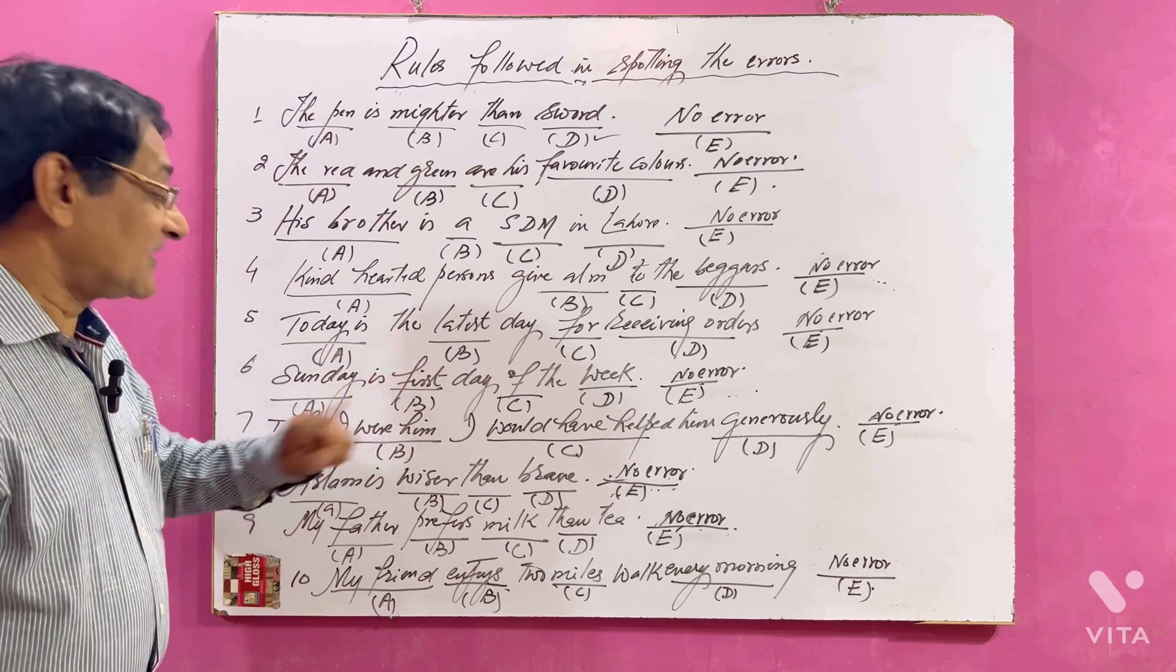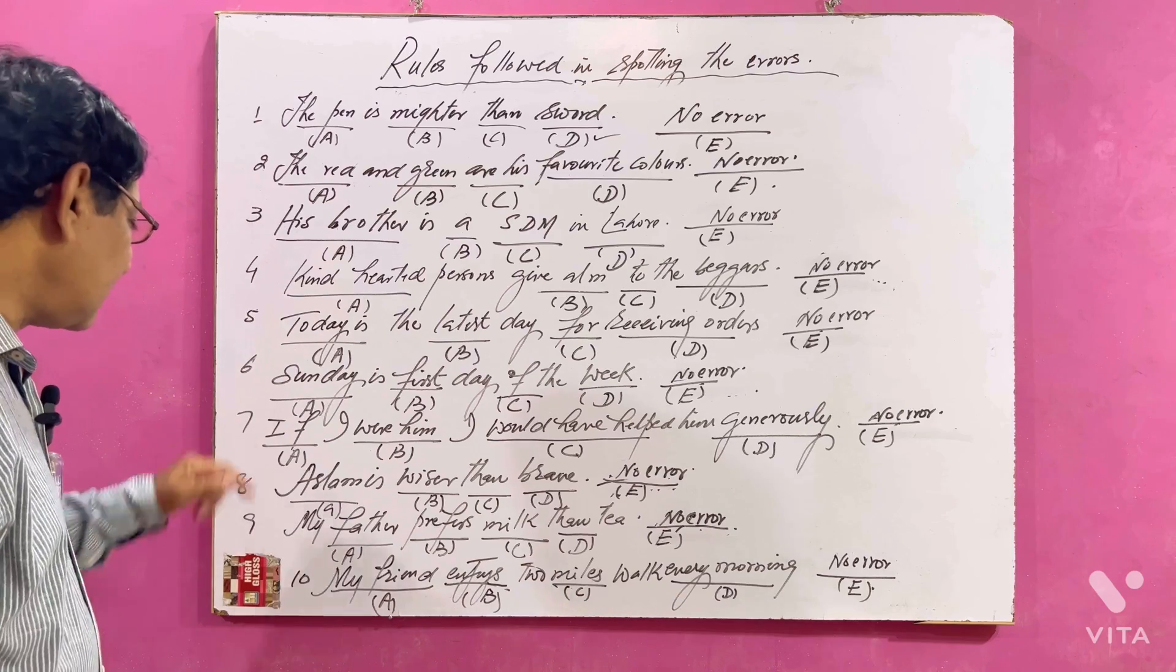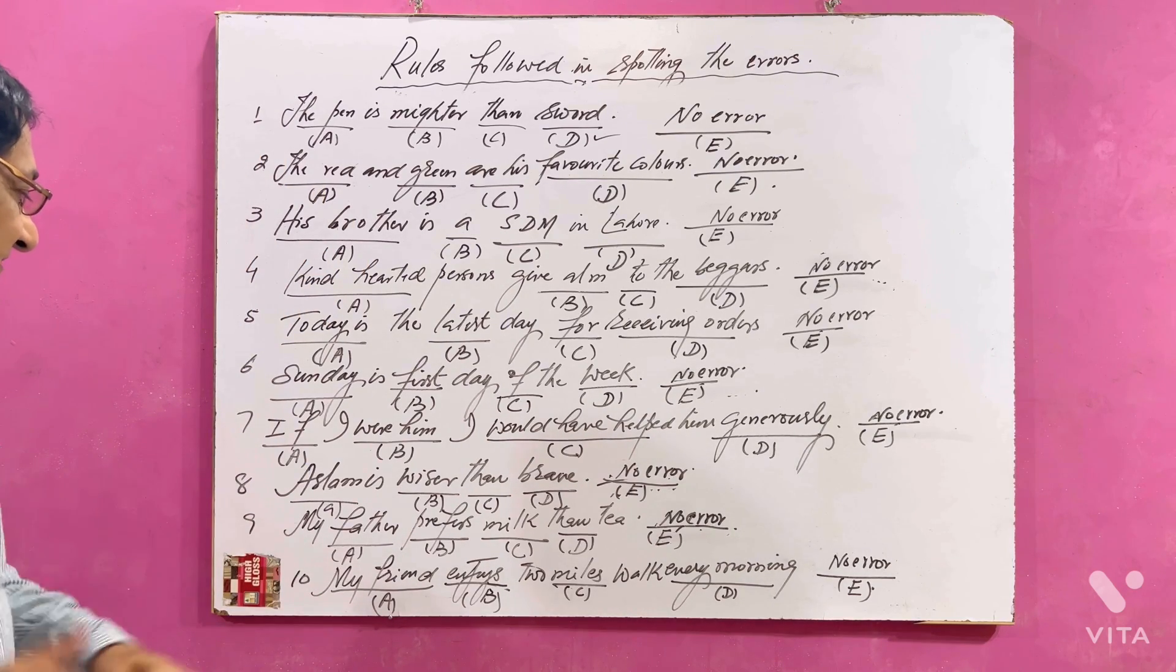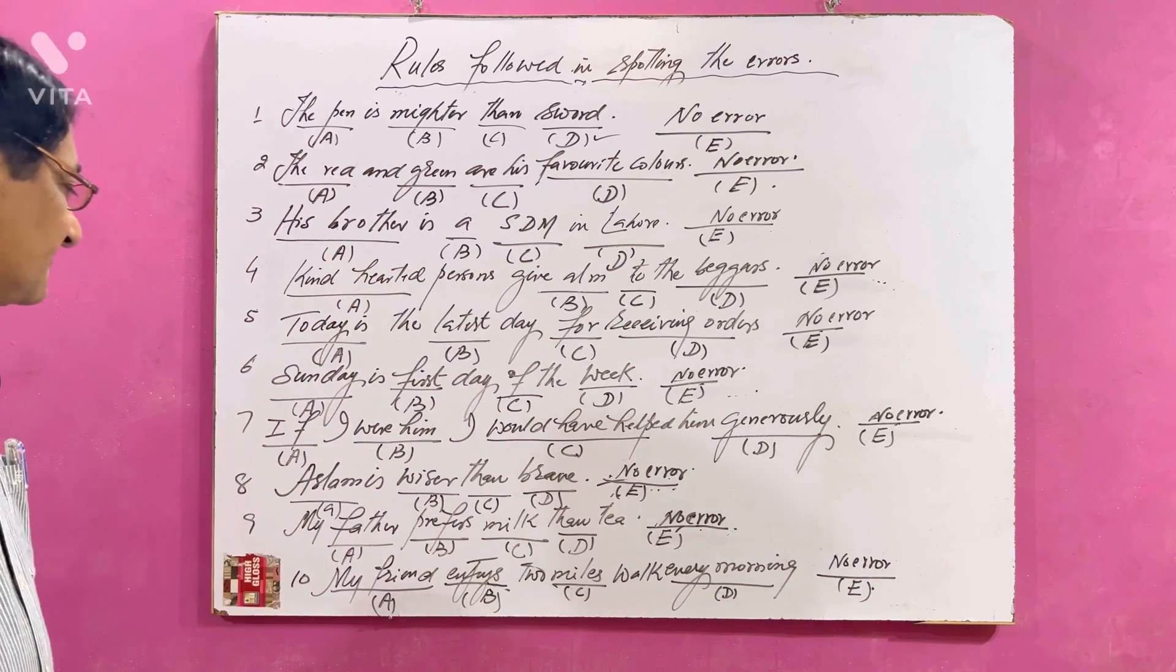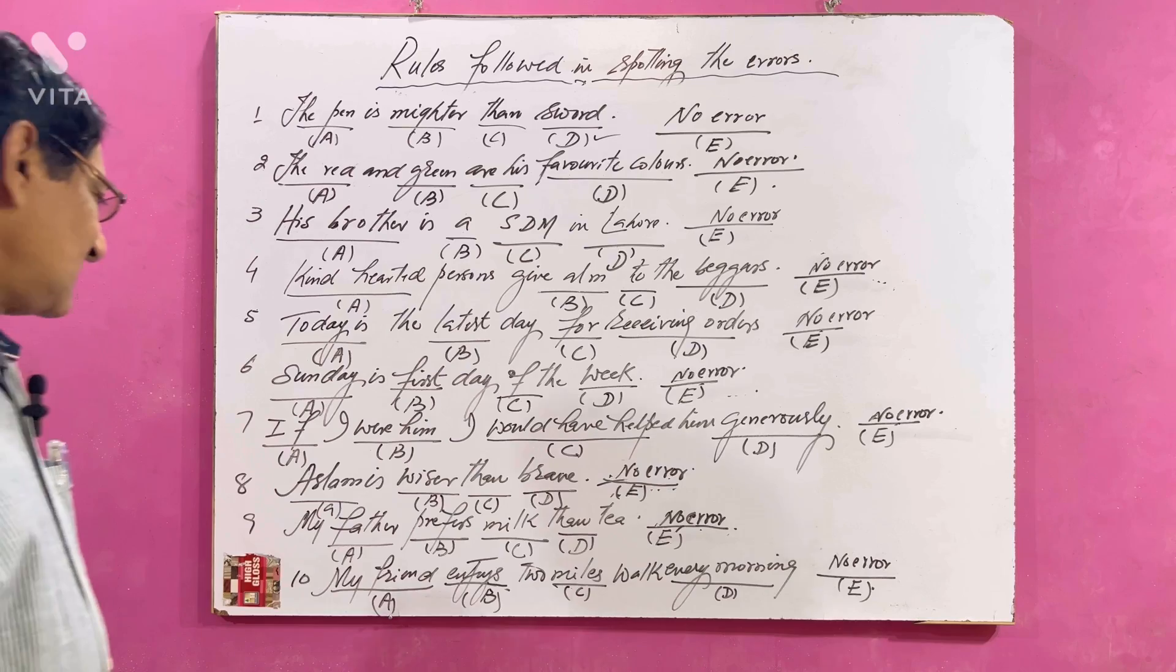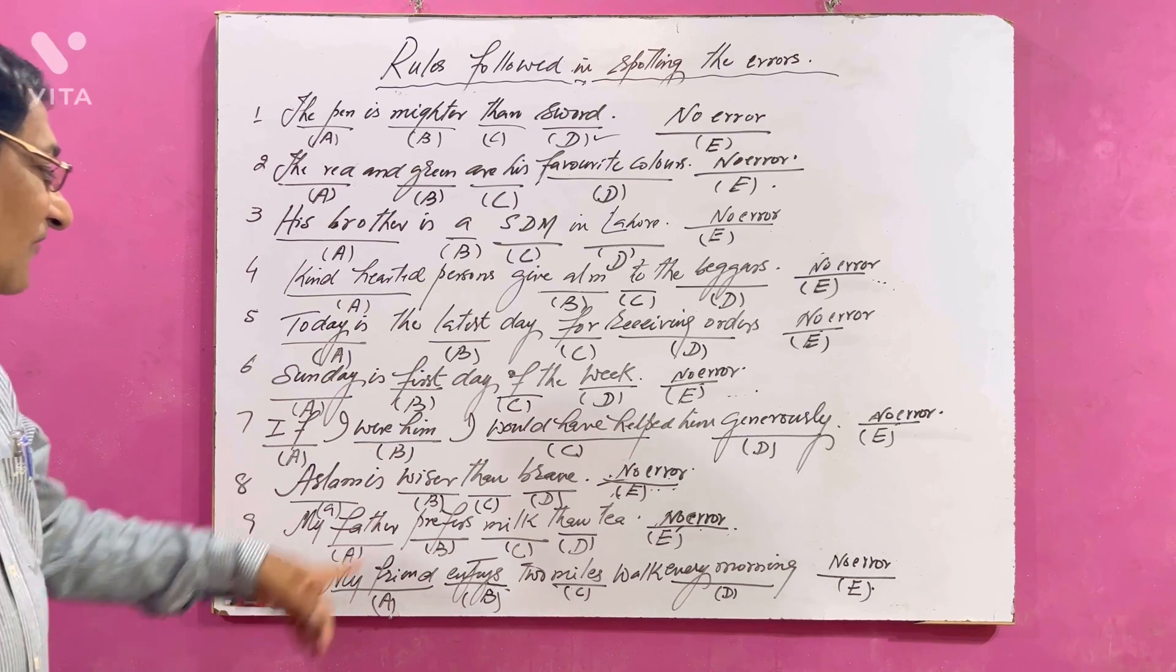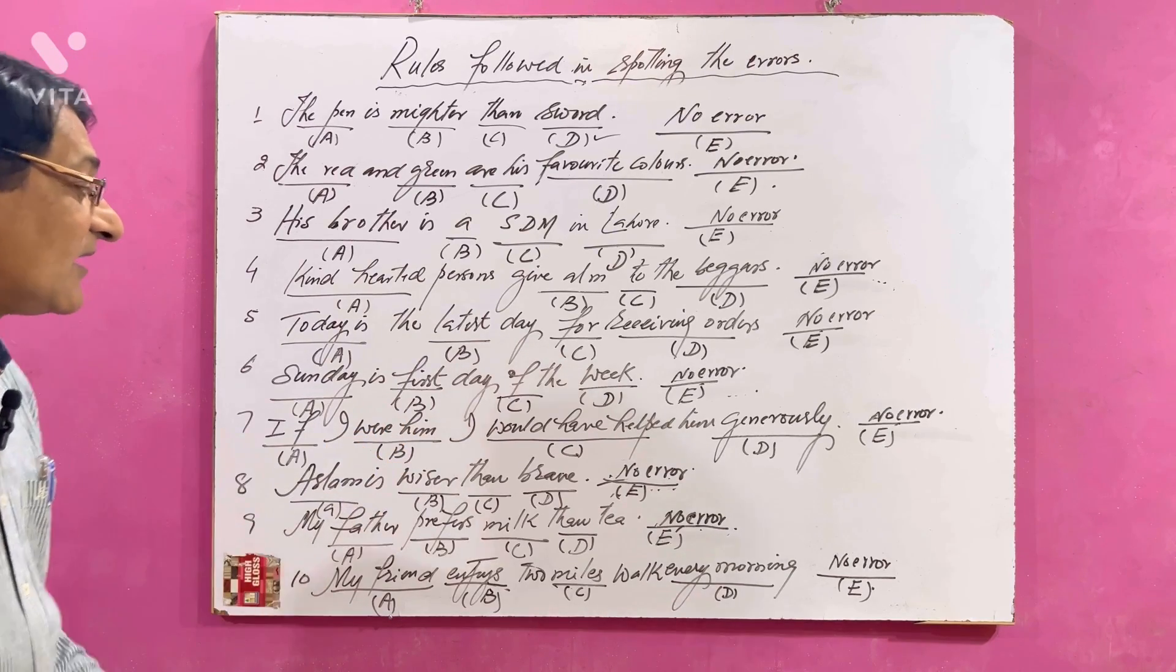Number seven: If I were him I would have helped him generously. Where's the mistake? Yes, instead of 'him' we have to write down 'he'. There is error, actually that stands in case of B, because if I were he, not him. When the pronoun is preceded by 'were' it has to come in subjective form - if I were he, I would have helped him generously.